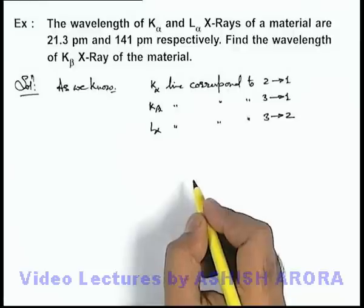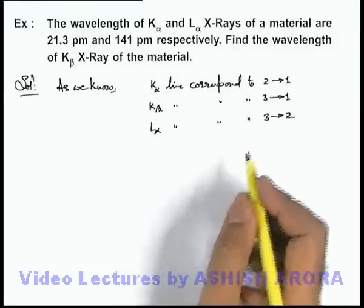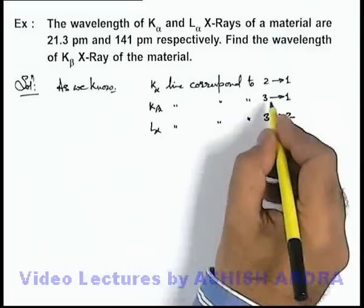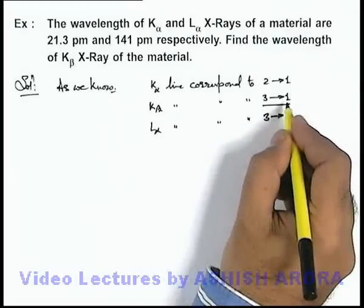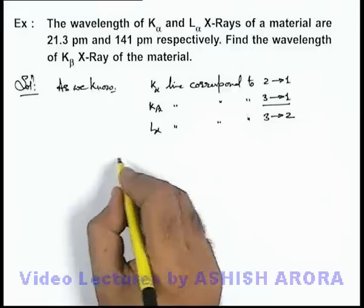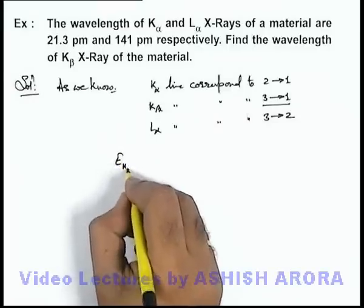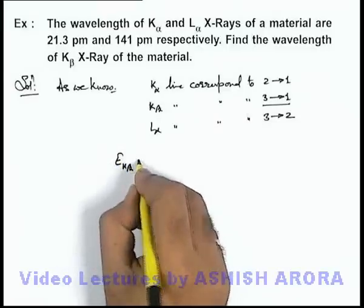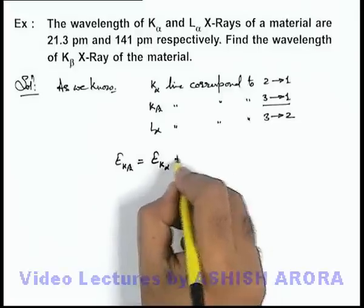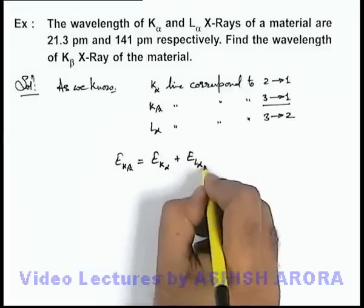And we know well by transition energies that energy for the transition 3 to 1 is equal to sum of the transition energies of 3 to 2 and 2 to 1. So we can write that transition energy of K-beta line will be equal to transition energy of K-alpha line plus transition energy of L-alpha line.